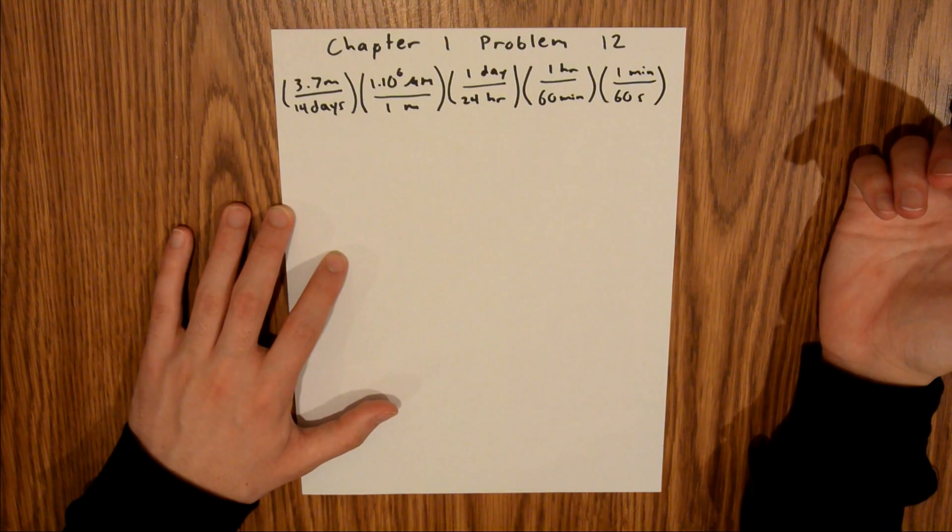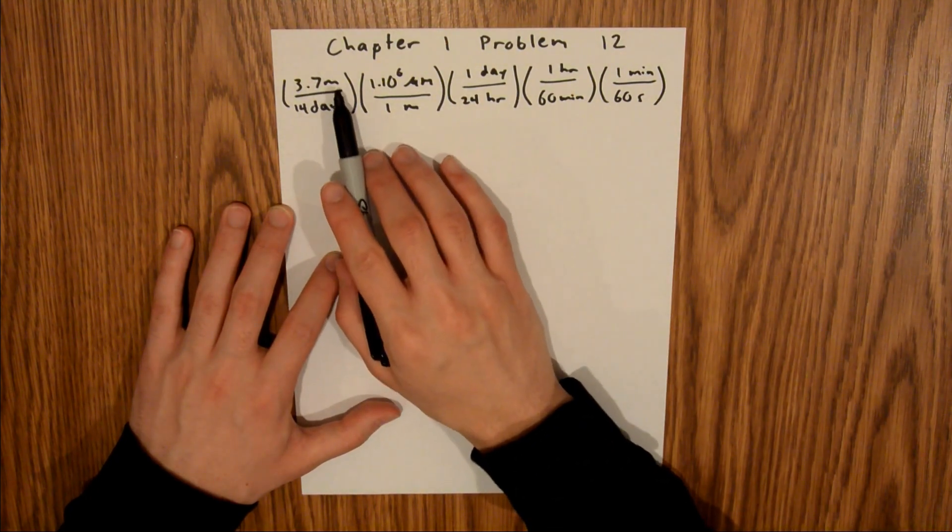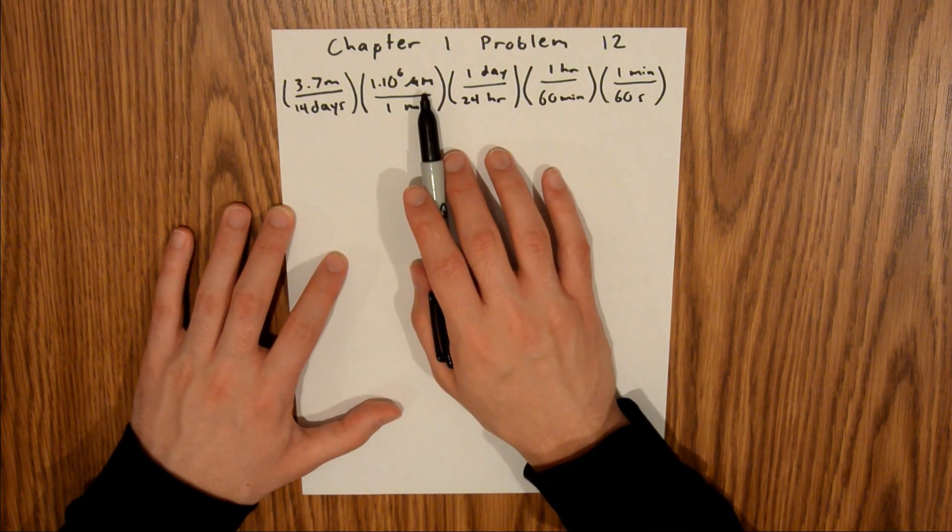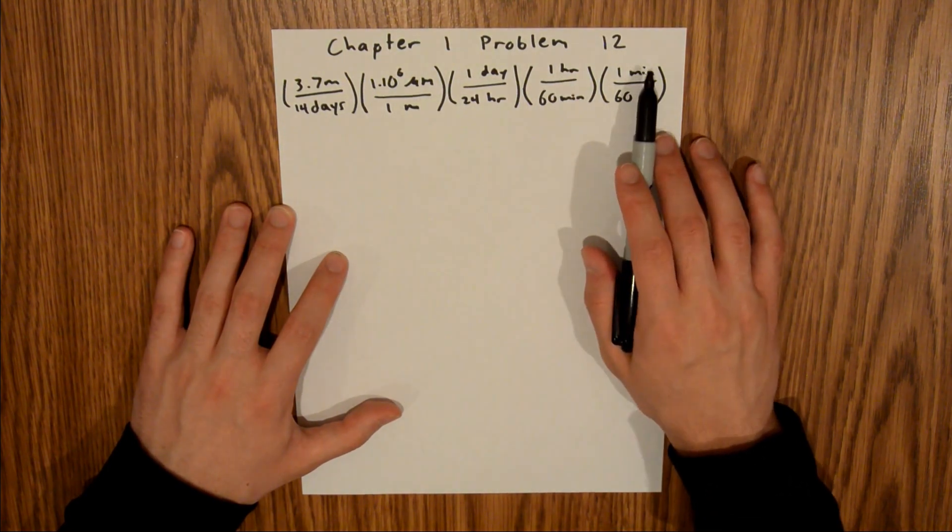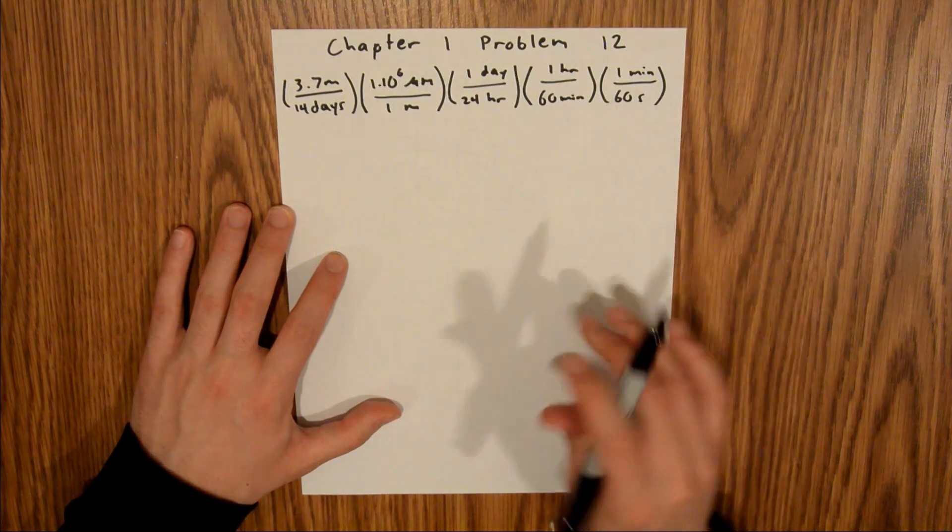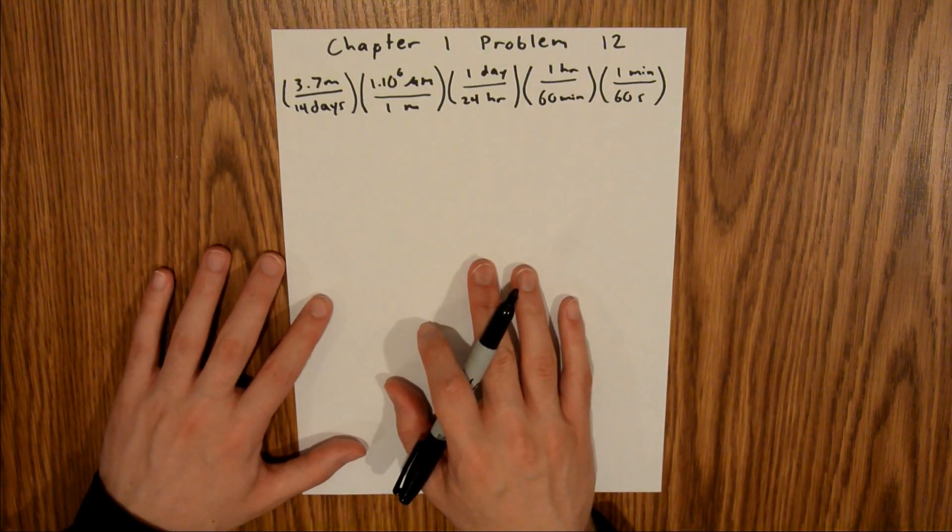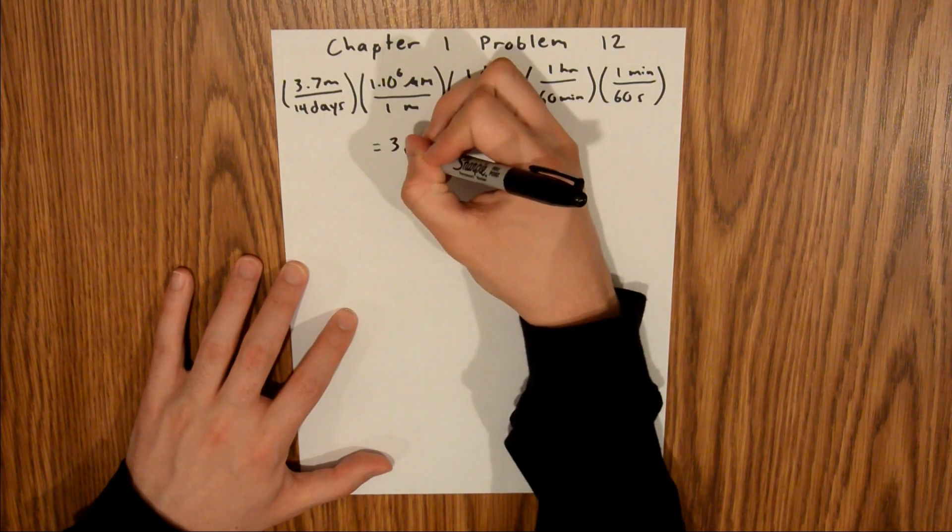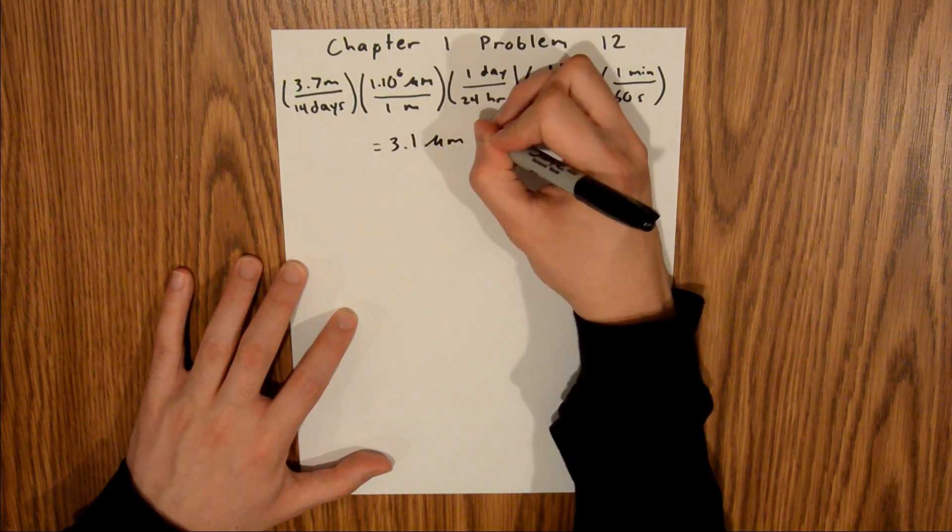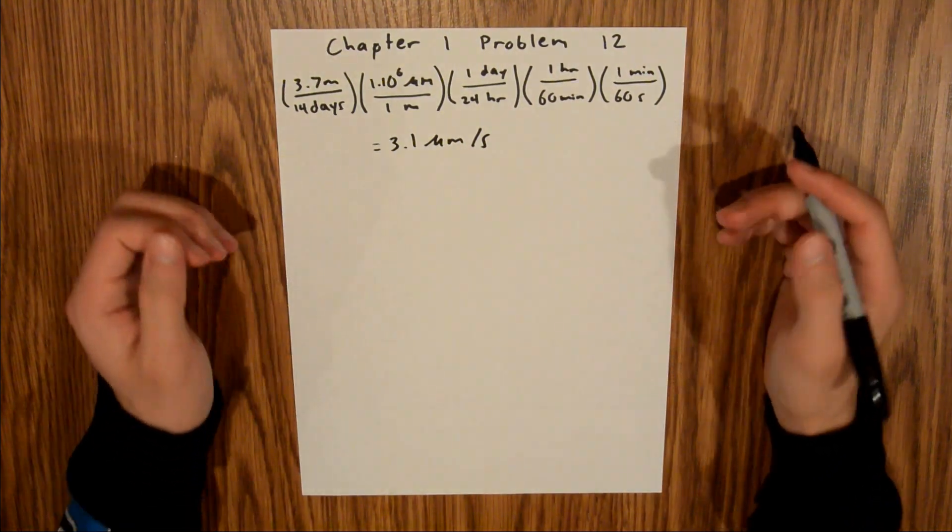And so if we look at all of our units, we can see here that meters and meters cancel to just leave micrometers, and then if we look at the denominator, the days, hours, and minutes all cancel, and that'll just leave us with micrometers per second. And so if you plug all those fractions into your calculator, you will be left with 3.1 micrometers per second. And that's your final answer.